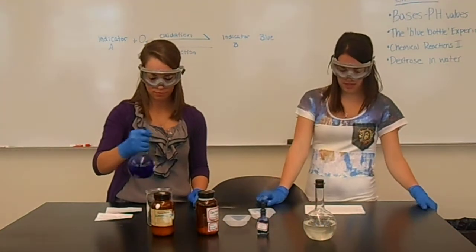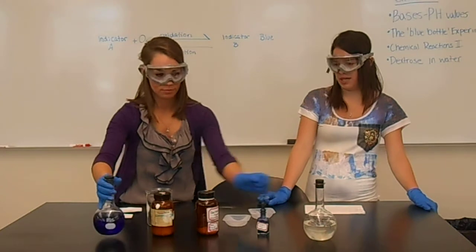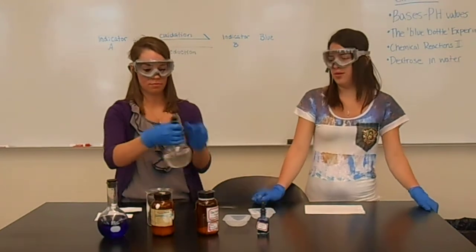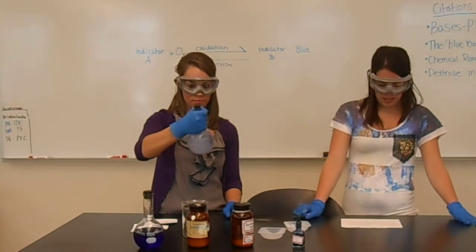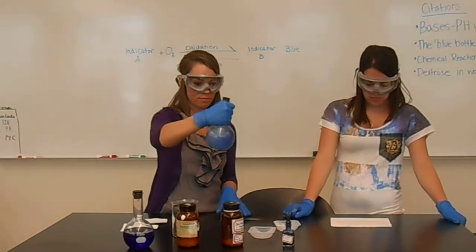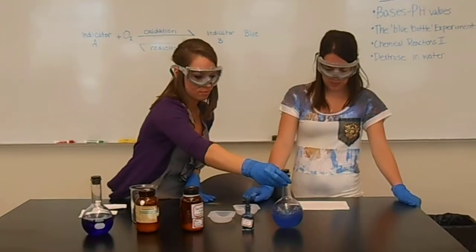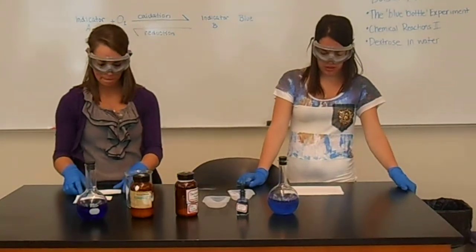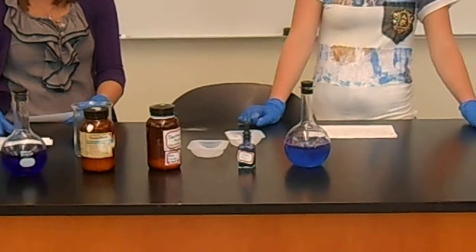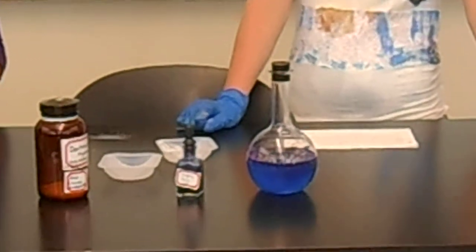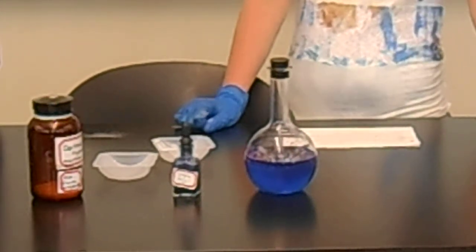We will then swirl the flask and allow it to sit for about a minute. We actually already made a pre-made solution to save some time. Once that's shaken, the flask will then turn blue so the color appears, and then again slowly fade into the colorless stage. You can repeat this step as many times as you would like.